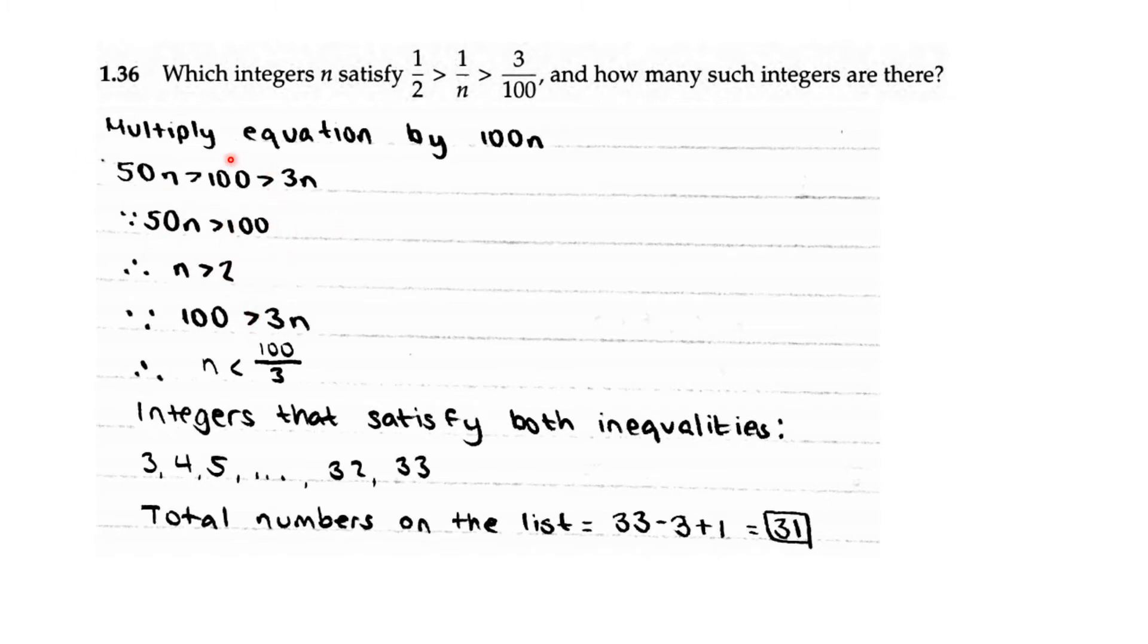And since 100 is greater than 3n, that means n is less than 100 over 3, which is approximately 33. So the integers that satisfy both inequalities are 3, 4, 5 all the way to 32 and 33. The total number of integers on this list is 33 minus 3 plus 1, which is 31.